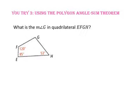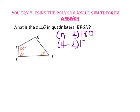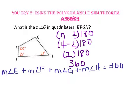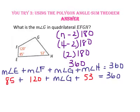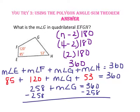Pause the video and do you try number 3. What is the measure of angle G in quadrilateral EFGH? Since the quadrilateral has 4 sides, we use 4 minus 2 times 180, which is 2 times 180, equaling 360 degrees. So the sum of angles E, F, G, and H equals 360. Substituting the known angle measures and combining like terms gives 258 plus angle G equals 360. Subtracting 258 from both sides, angle G equals 102 degrees.